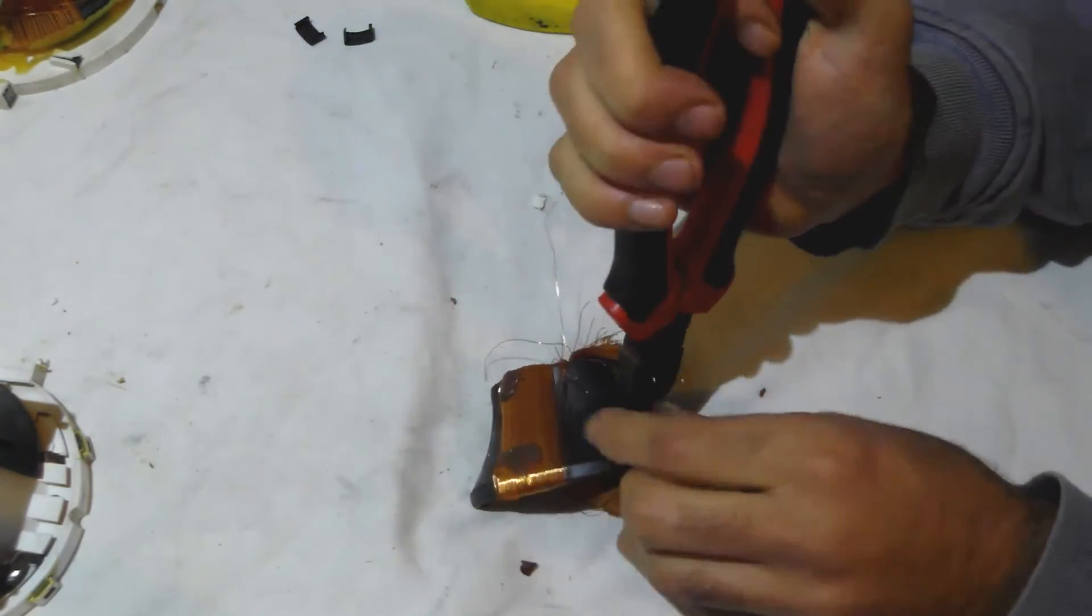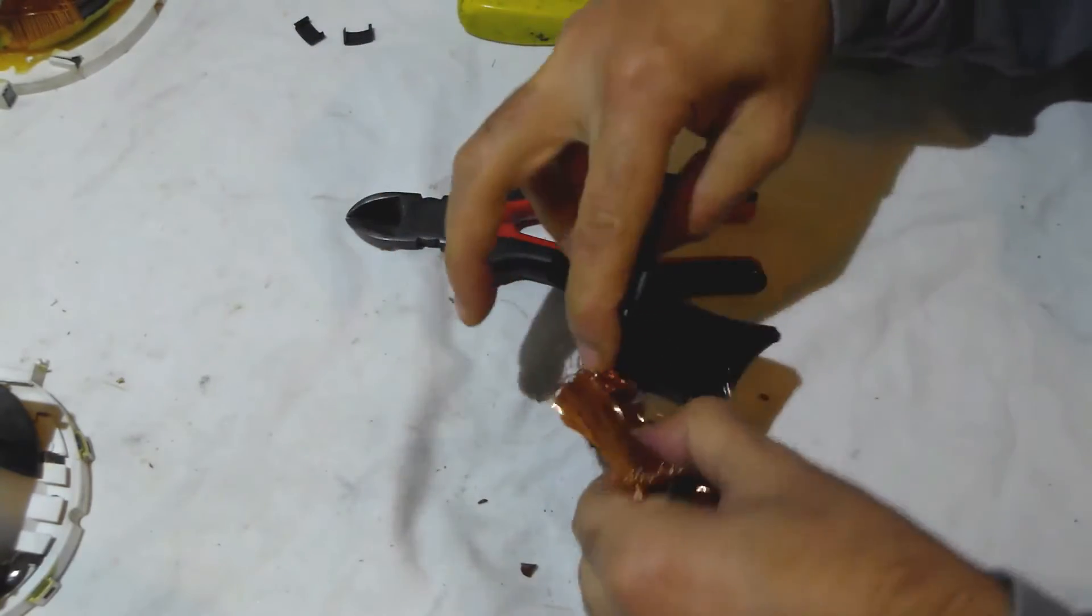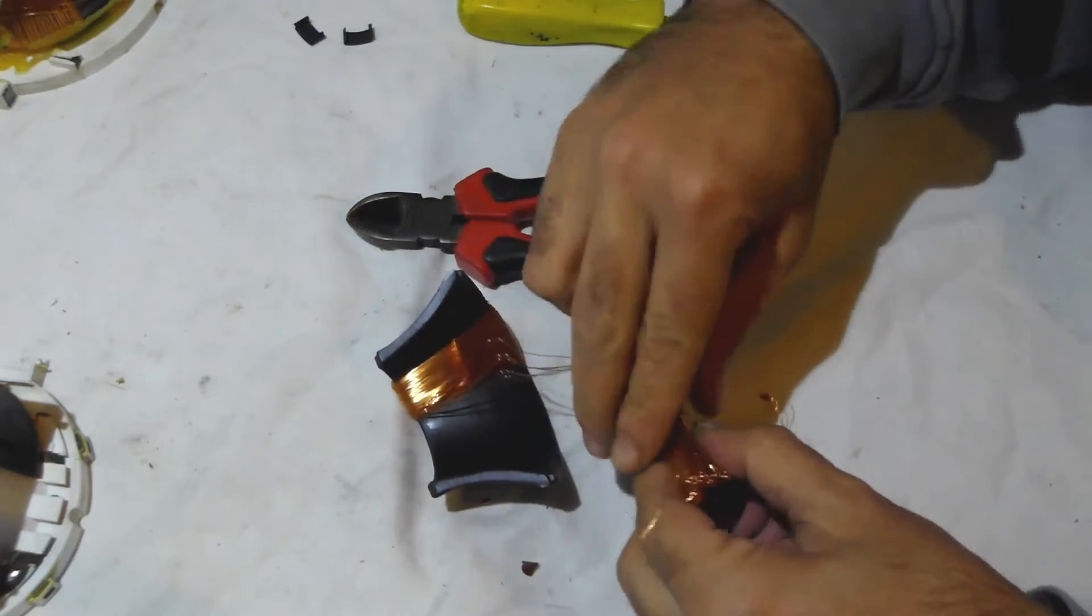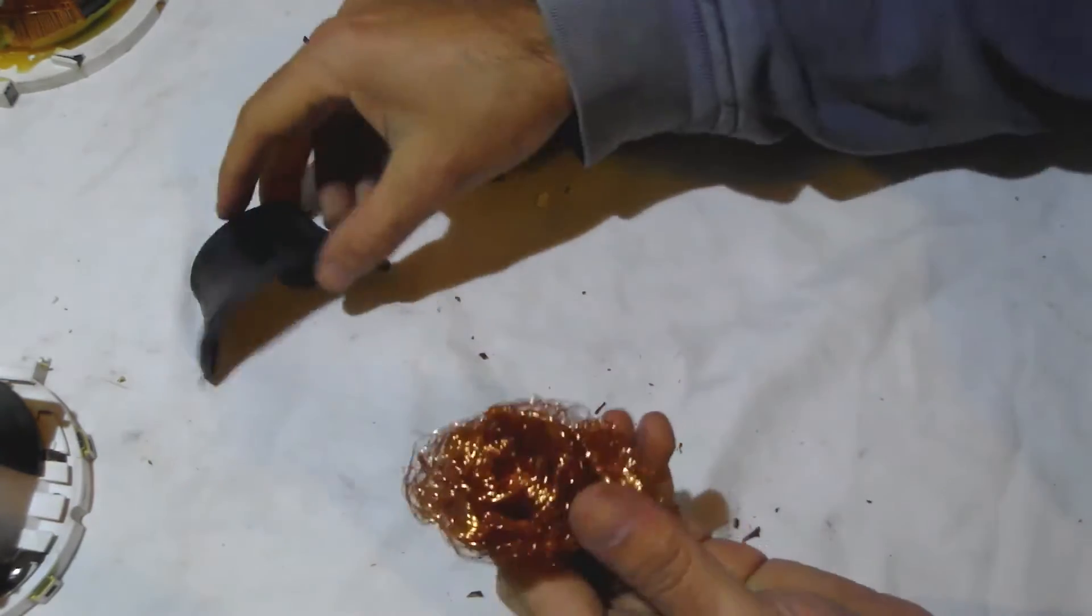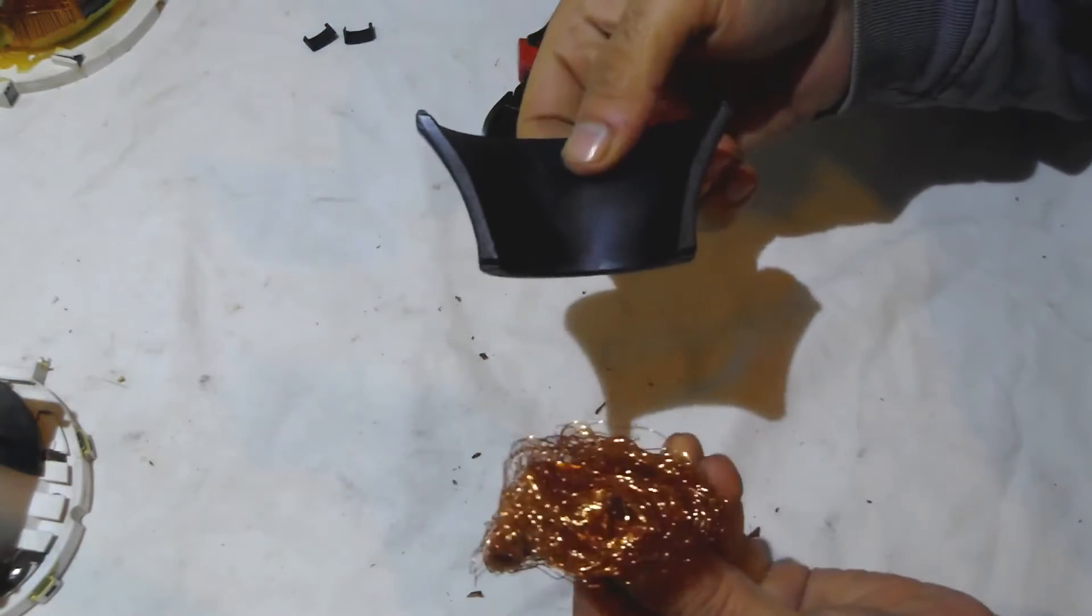So there you have it. There it is there, that's what you get from one ferrite winding.